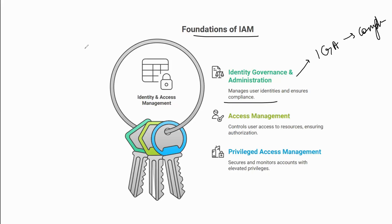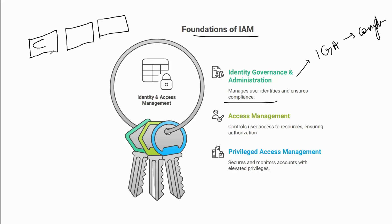Before getting into the details, there are three main reasons why organizations use IAM. The first is compliance — every organization tries to onboard a tool primarily to ensure they are compliant, whether managing user data, user information, or any systems that must function in a certain way.